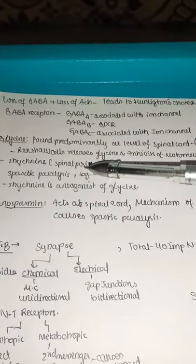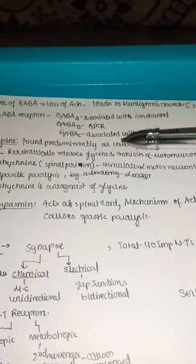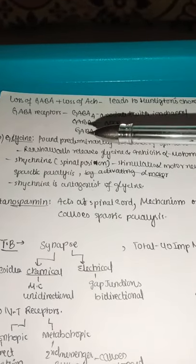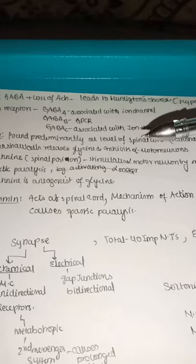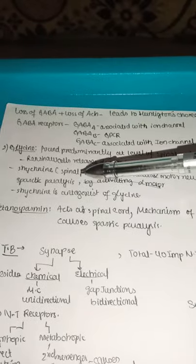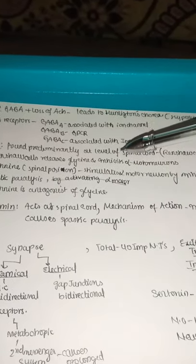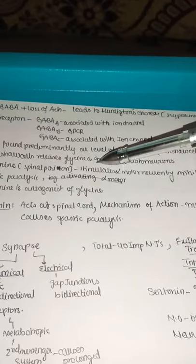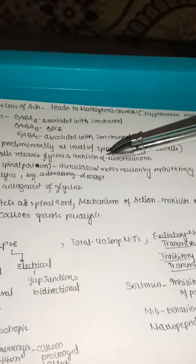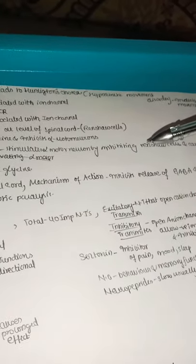Glycine is found predominantly at the spinal cord level in Renshaw cells. Renshaw cells release glycine and inhibit alpha motor neurons. Strychnine is a spinal poison that stimulates alpha motor neurons by inhibiting Renshaw cells, causing spastic paralysis — the opposite effect to glycine, which inhibits alpha motor neurons.